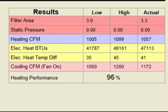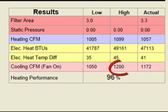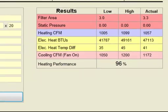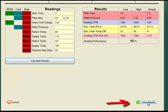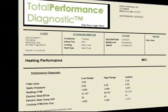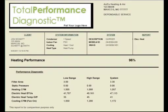With a 3 ton heat pump or air conditioning system, we would expect the cooling CFM to fall between 1,050 and 1,200 cubic feet per minute. This system's actual cooling CFM is 1,172 cubic feet per minute. Clicking the Save Report button at the bottom of the page will save, archive, display, and email the client report.